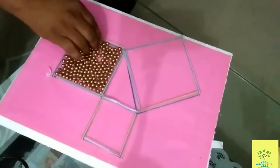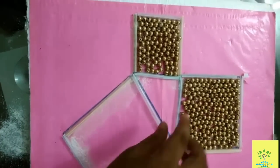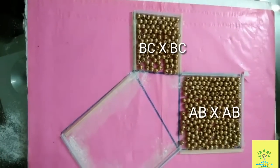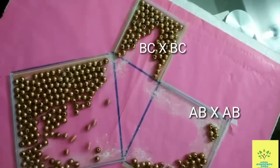So we will fill it also. Both squares together show AB² + BC² is equal to